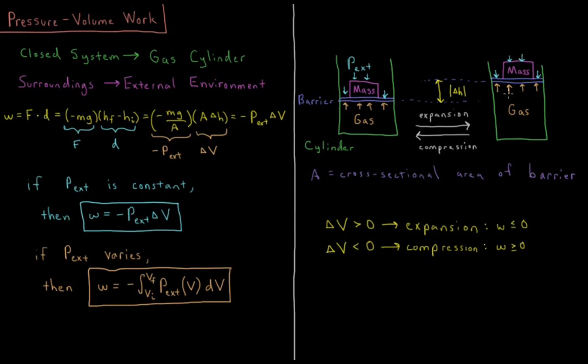And alternatively, during compression, going from the right to the left, our final height is lower than our initial height. So the change in volume is negative. And as a result, this work integral is going to be positive. So the surroundings does work on the system to compress it and it gives energy to the system. Thus the work that's done is greater than zero.